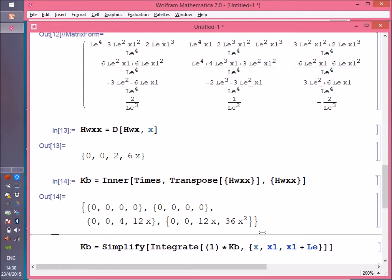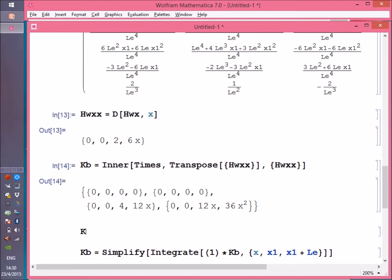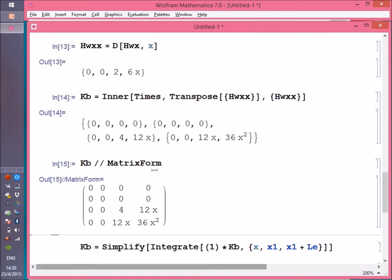Maybe I can just show it here in matrix form, Kb matrix form. So this is how it's going to look like.